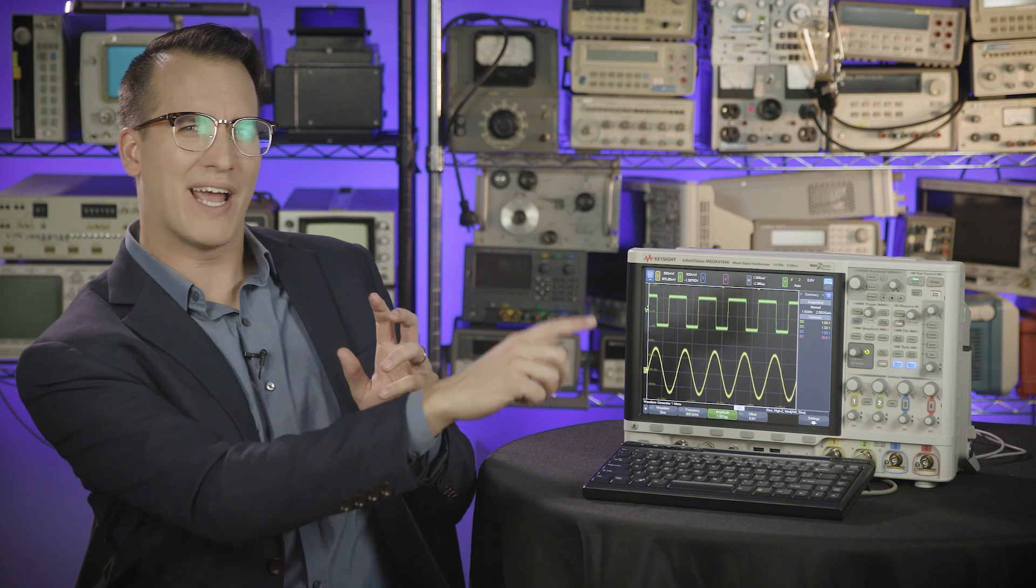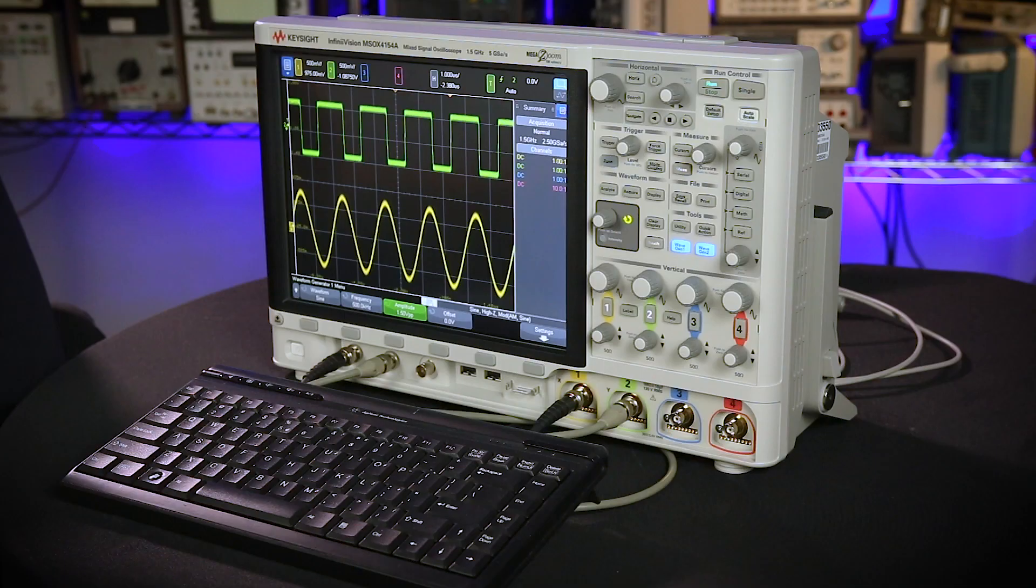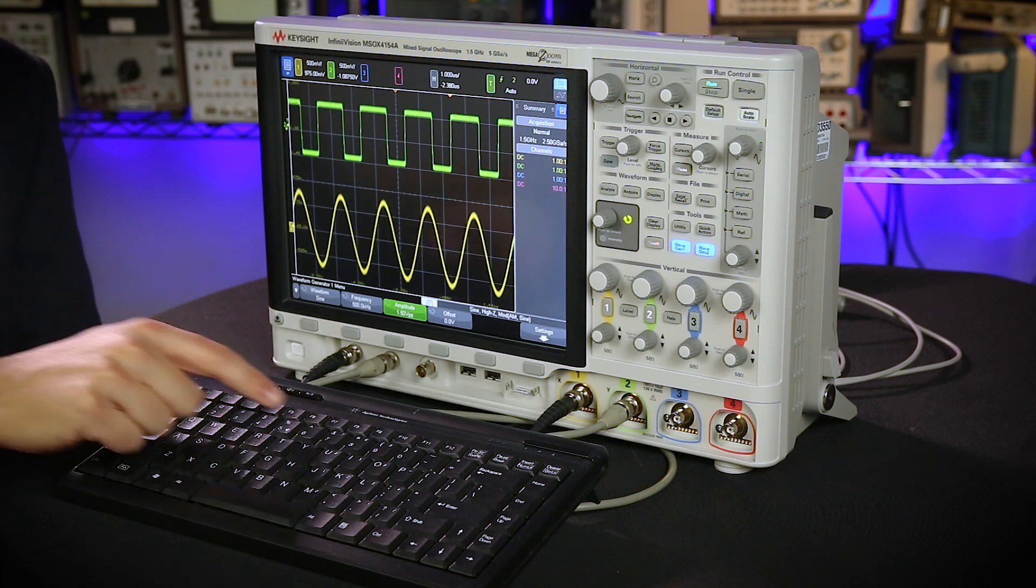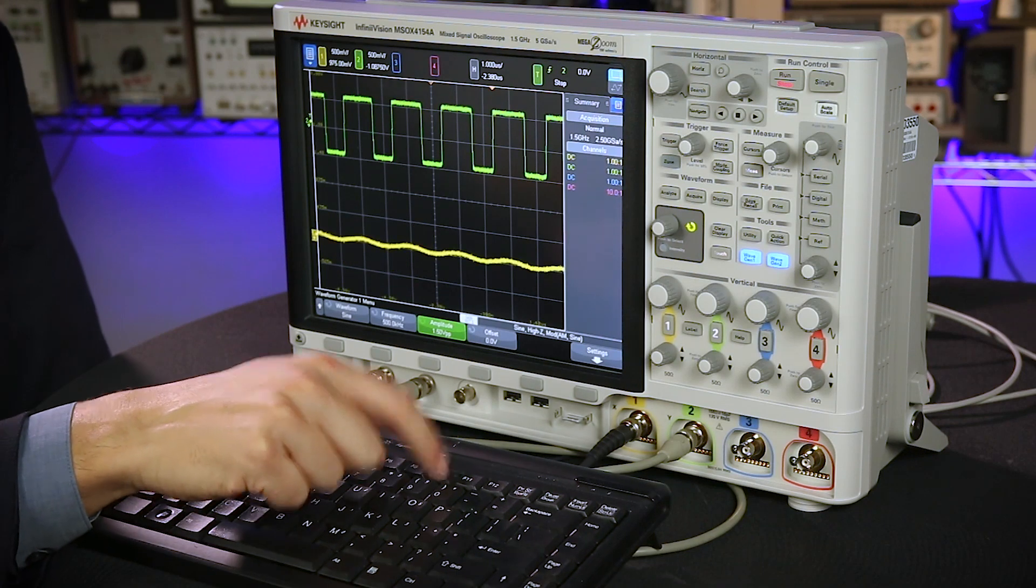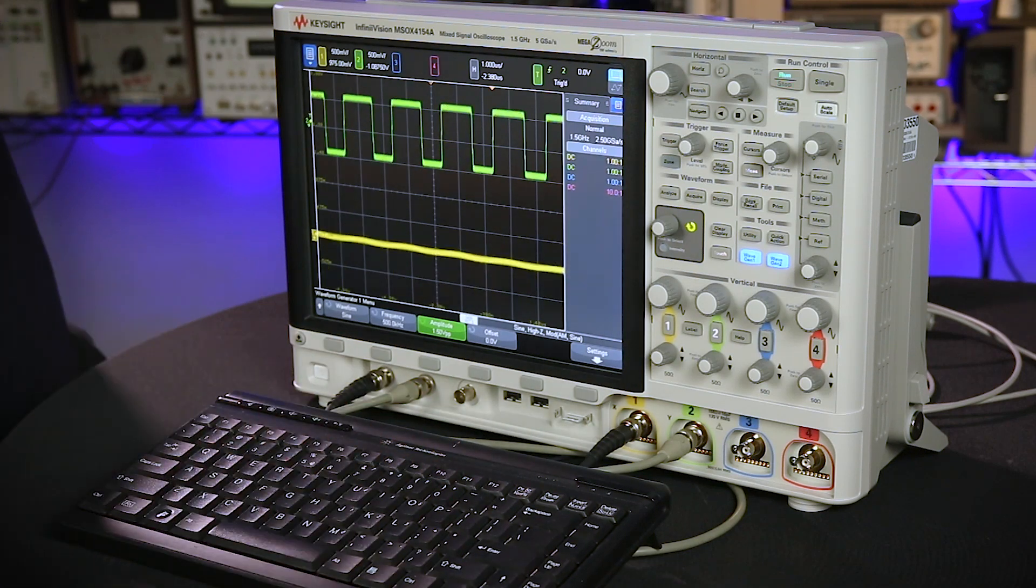For those of you who physically sit in front of a scope, or at least nearby, you almost certainly had a moment where you couldn't quite reach the run or stop button. That's where keyboards come in handy. For this scope, you can use F5 for run, F6 for stop, and you can see the scope has stopped. And F10 for single. And of course, F5 for run.